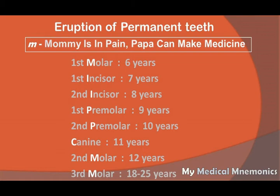C from 'can' represents canine, erupting at around eleven years. Then 'make' and 'medicine' — we already used one M for first molar, so these two M's represent second molar and third molar. Second molar erupts at around twelve years and third molar at around eighteen to twenty-five years. The timing is simple: start from six years, then seven, eight, nine, ten, eleven, twelve — adding one year each time — then jump to eighteen to twenty-five for the third molar.